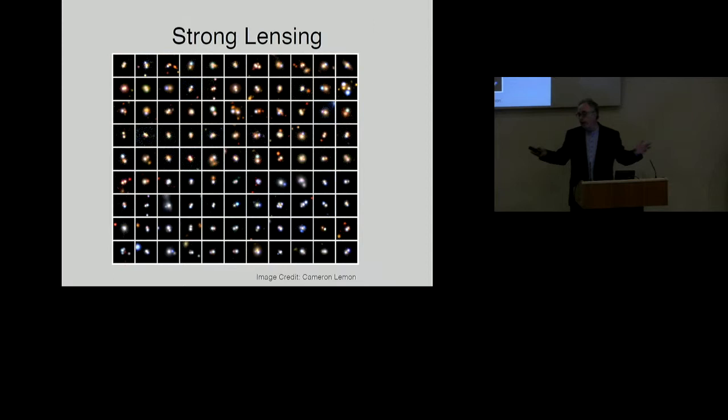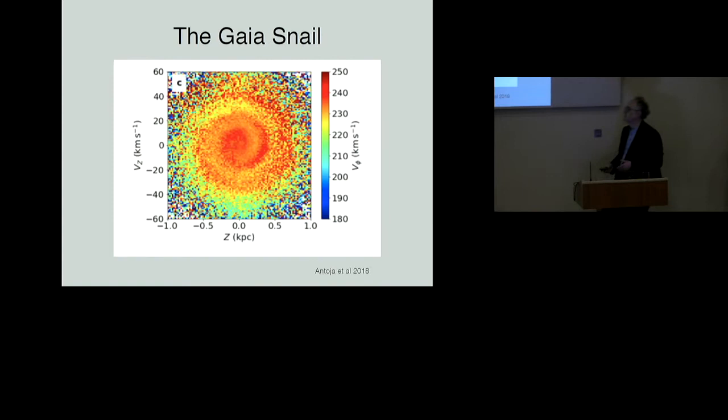Here's another amuse-bouche that was discovered, and it was plotted directly from the data. The data is publicly available. Anyone could have made this plot. It is a plot of the Gaia snail. What is plotted here? We're looking at stars in our own galaxy, predominantly disk stars, nearby stars, and we're simply plotting height above or below the galactic plane versus vertical velocity, and the stars are color-coded according to their azimuthal motion, and we see a snail.